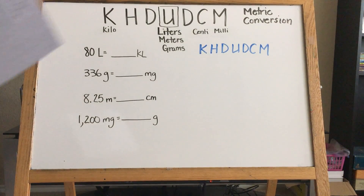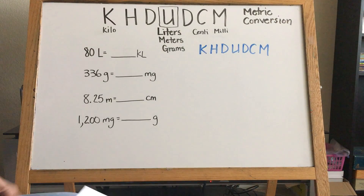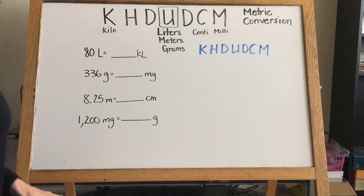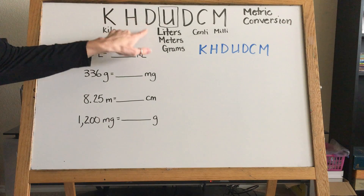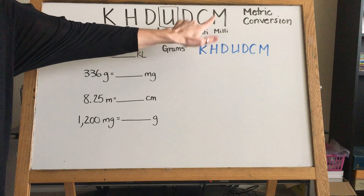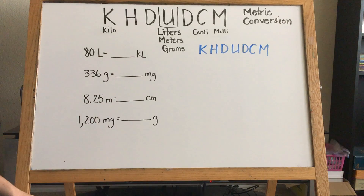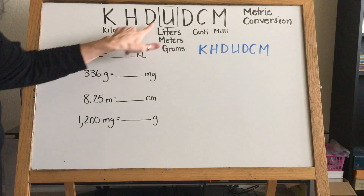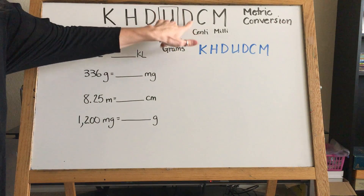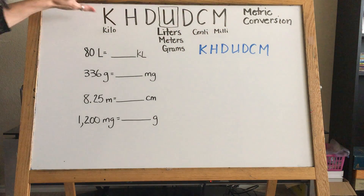We're going to talk about metric conversion. What we use to help us remember — the easy way to convert — is 'King Henry Died Unexpectedly Drinking Chocolate Milk.' There are different versions of this, but the one we use in class is 'King Henry Died Unexpectedly Drinking Chocolate Milk.' These all stand for one part of the metric system.